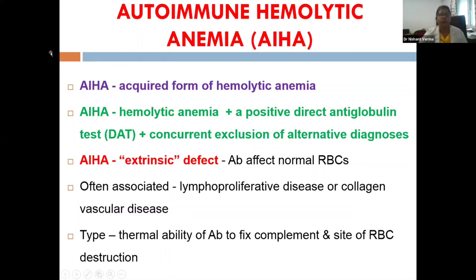Autoimmune hemolytic anemia is an acquired form of hemolytic anemia. The definition is very simple: any hemolytic anemia with a positive direct antiglobulin test, along with exclusion of other alternative diagnoses, is considered autoimmune hemolytic anemia. This is an extrinsic defect, unlike hereditary hemolytic anemias such as hereditary spherocytosis or enzyme deficiencies, because the antibodies are acting against normal RBCs.